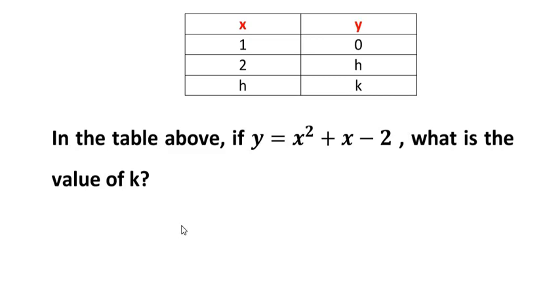Hello and welcome to my channel. In this video we are going to solve an example on functions and substitutions. Let's see how to solve this question. There is a table given with certain x values and y values. In the second row the y value is h, and in the third row it is k. The x value in the third row is h. There are no values given to it; we are supposed to find out what is the value of h and what is the value of k.